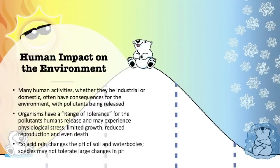Let's start with a little bit of an introduction and talk about how humans impact the environment. In AP Environmental Science you have probably learned that human activities often have negative consequences on the environment. We use a variety of chemicals, we release trash, and we have air pollution emitted from a variety of sources, all of which can have negative impacts.